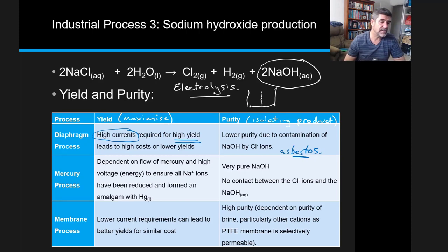But the problem with the diaphragm process wasn't just about asbestos. It was also that you either had very high costs to produce high yields, or you had to drop your yields.